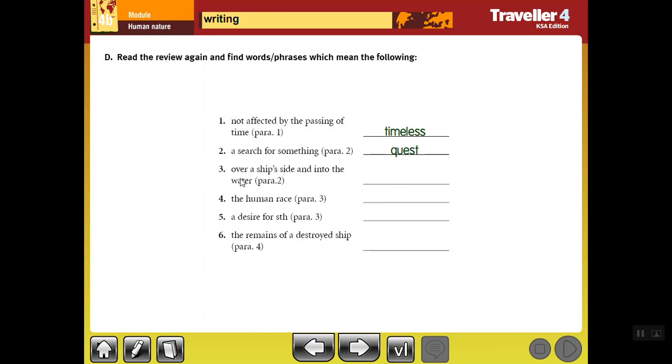The third one: Over a ship's side and into the water. If somebody falls from the ship into the water, this is overboard - سقط من فوق السفينة. The fourth one: The human race. A race here doesn't mean مسابقة. The human race means الجنس البشري - mankind. The fifth one: A desire for something. Desire means رغبة. A desire for something - this is thirst. If you are thirsty, you need to drink water. That's a thirst.